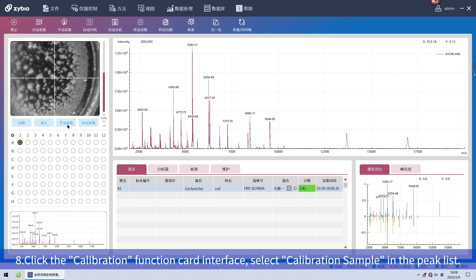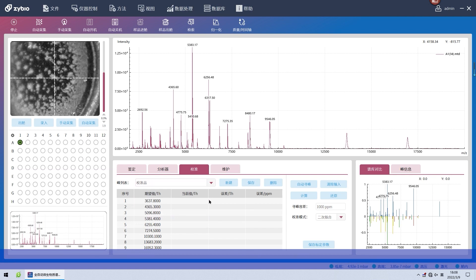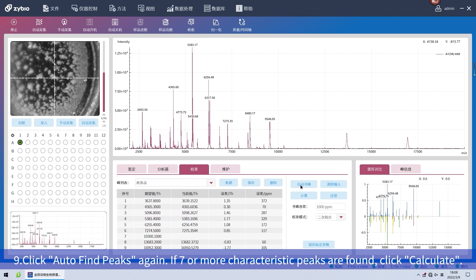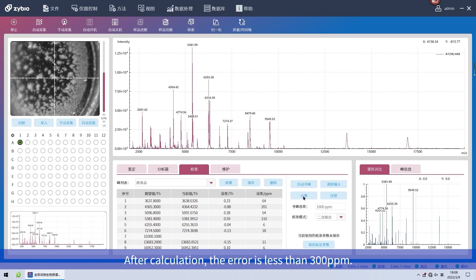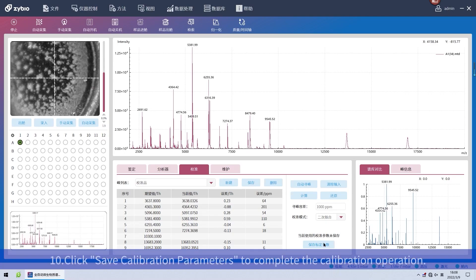Eighth, click the calibration function card interface. Select calibration sample in the peak list. Ninth, click auto-find peaks again. If 7 or more characteristic peaks are found, click calculate. After calculation, the error is less than 300 ppm. Any 7 of the 9 characteristic peaks mentioned above can be used. Click save calibration parameters to complete the calibration operation.